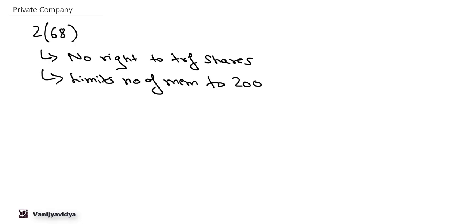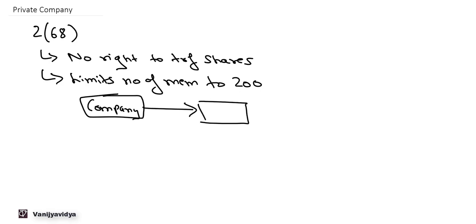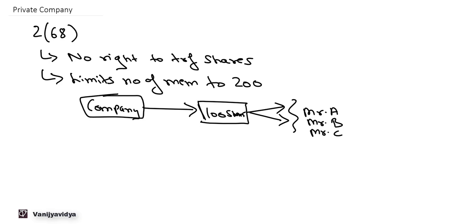For example, say there is a private limited company with 100 shares. These 100 shares are jointly held by Mr. A, Mr. B, and Mr. C. Even though there are three persons, all of them holding 100 shares jointly will be considered as one member for the purpose of calculating the limit of 200.